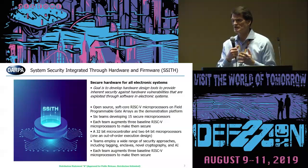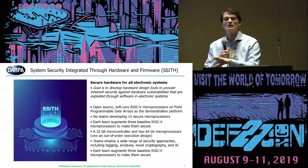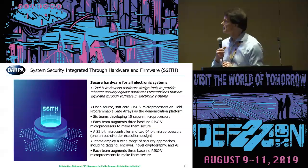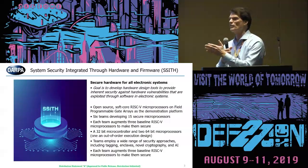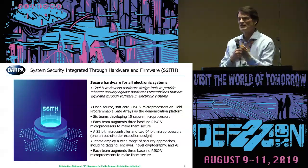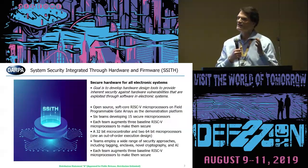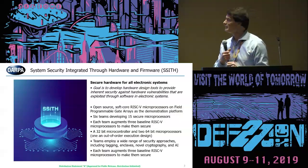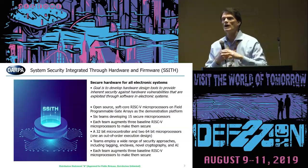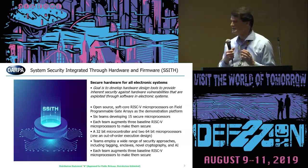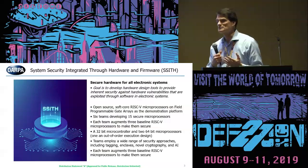We're using an open source microprocessor core called RISC-V. Unlike an Intel or ARM processor, it is completely open source and anyone can know what the RTL is. We have six teams developing 15 different secure processors spanning all the way from an embedded 32-bit processor up to a very high-performance speculative out-of-order execution processor. Speculation was the source of the Spectre and Meltdown attacks. Each team augments three baseline RISC-V processors using a wide range of security approaches, including metadata tagging of data and pointers, secure enclaves, novel cryptography, and machine learning to detect attacks.